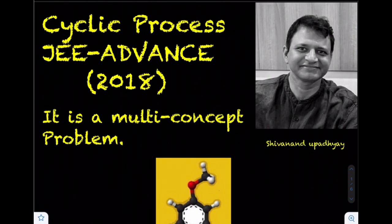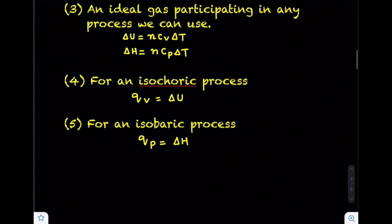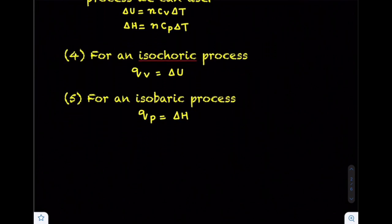This problem is based on cyclic process and is a multi-concept problem based on the following concepts. The first concept is that internal energy and enthalpy are state variables. The second is the relation between internal energy and enthalpy. The third is that for an ideal gas participating in any process, we can use change in internal energy equal to nCv·ΔT and change in enthalpy equal to nCp·ΔT. The fourth is that for an isochoric process, using the first law of thermodynamics, Qv equals ΔU, and the fifth is that for an isobaric process, Qp equals ΔH.